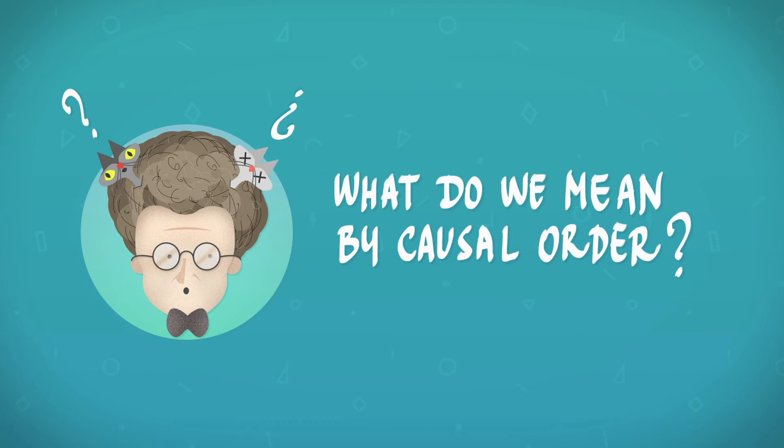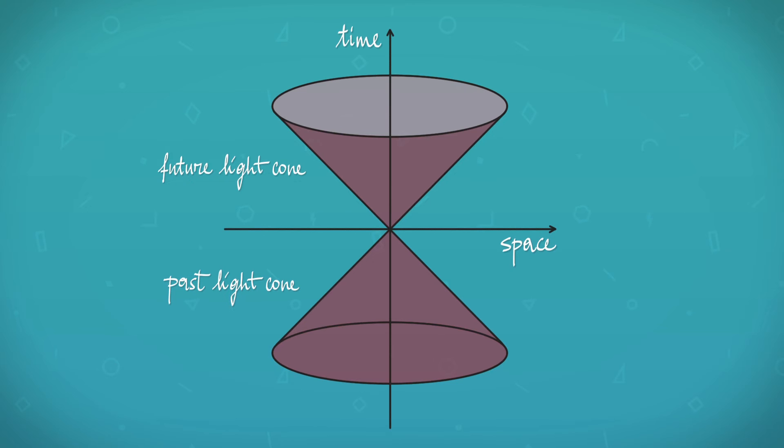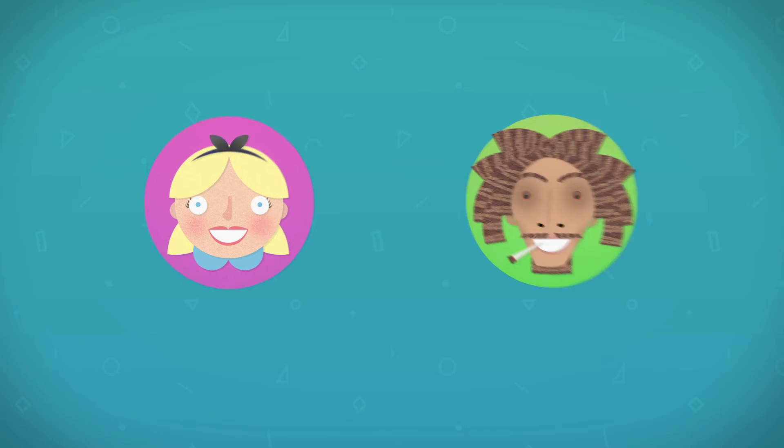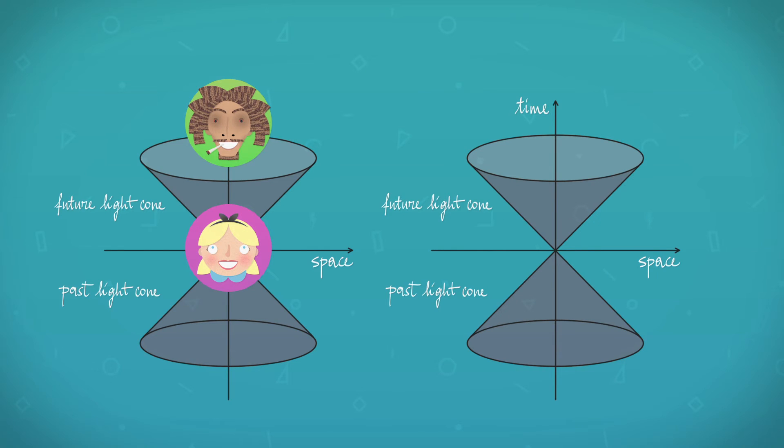If you think about two events in space-time, where Alice or Bob acts, you see that Alice is in the causal past of Bob if she can signal to him, and Bob is in the causal past of Alice if he can signal to her.